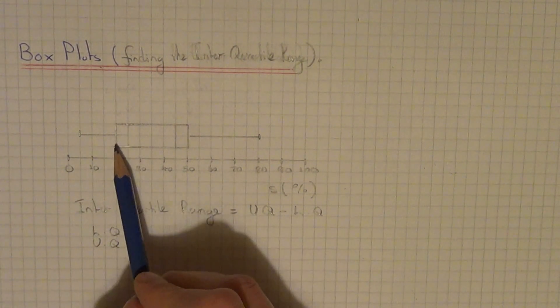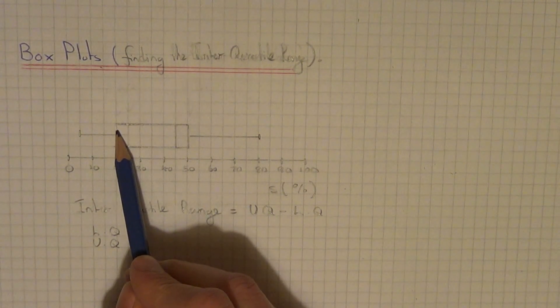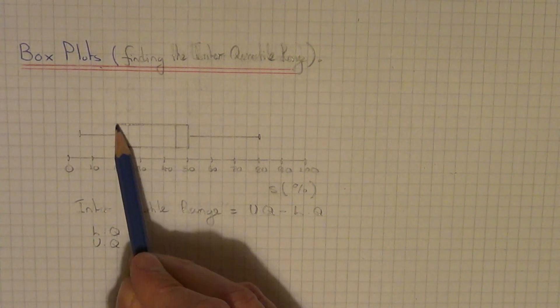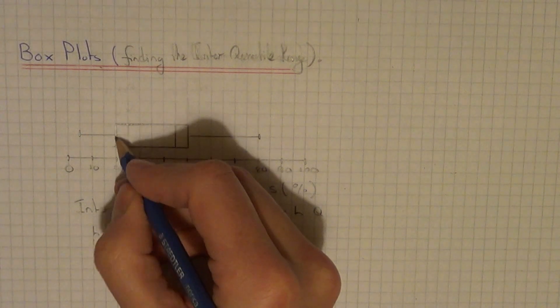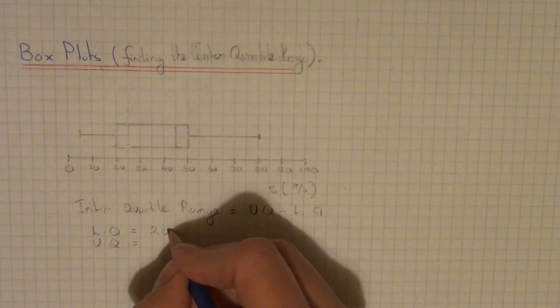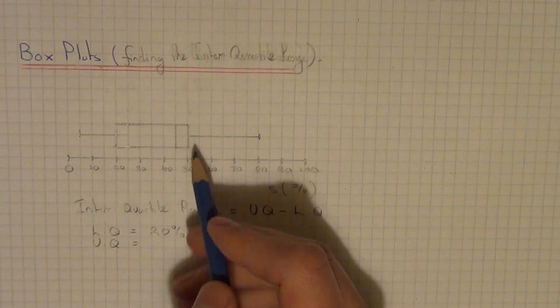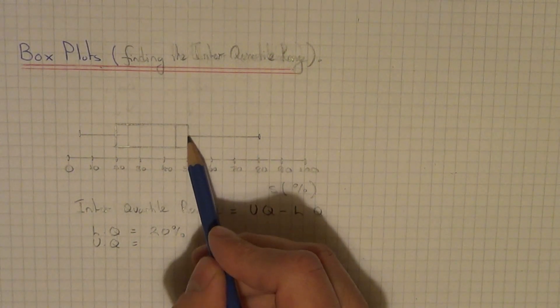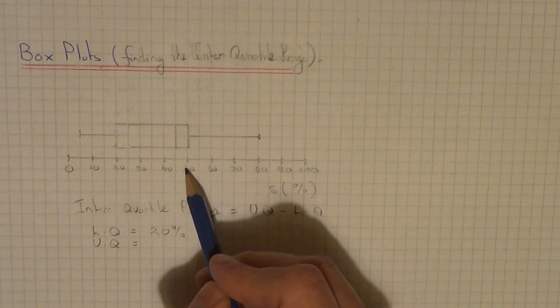The lower quartile is the line on the left side of the rectangle. Our lower quartile is 20%, and our upper quartile is the line on the right-hand side of the rectangle, so this is 50%.